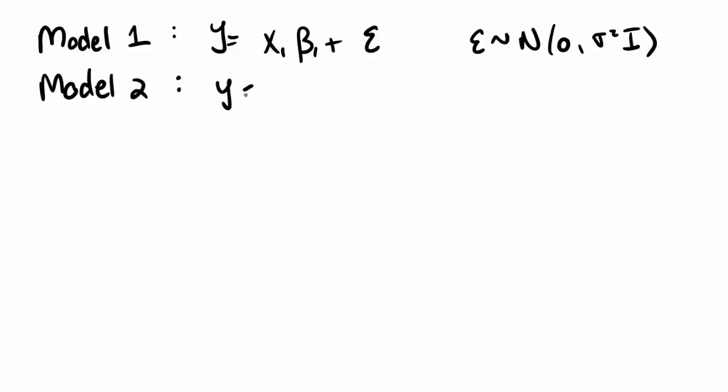Model 1 is where our response is x1 beta 1 plus error, where our error is normal zero sigma squared i. And model 2 is where y is x1 beta 1 plus x2 beta 2 plus error, where our error still follows that same distribution.